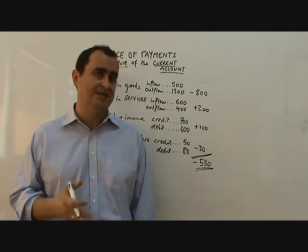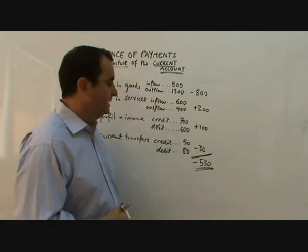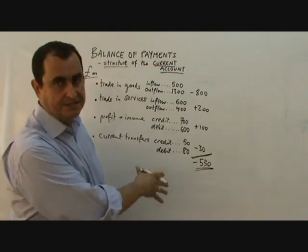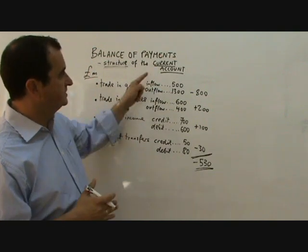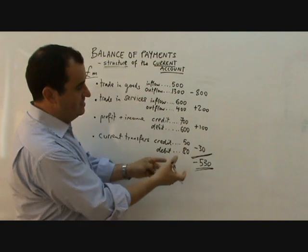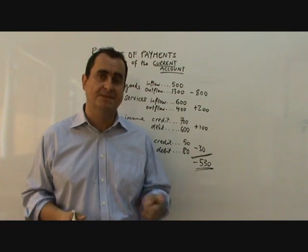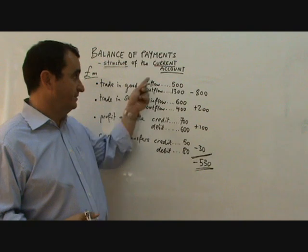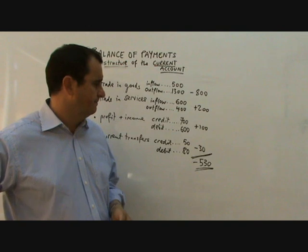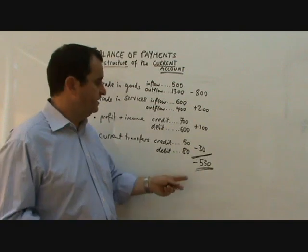The UK does have a current account deficit at the moment, which is generally considered bad news because it implies the country is not competitive and must be borrowing money to finance its overspending. The other account — the capital account — must then have a final line of plus 530. The current account and the capital account cancel each other out. The capital account, which records flows of money to do with saving, investment, and borrowing, would show plus 530 flowing into the UK because we're borrowing money to finance our overspending.